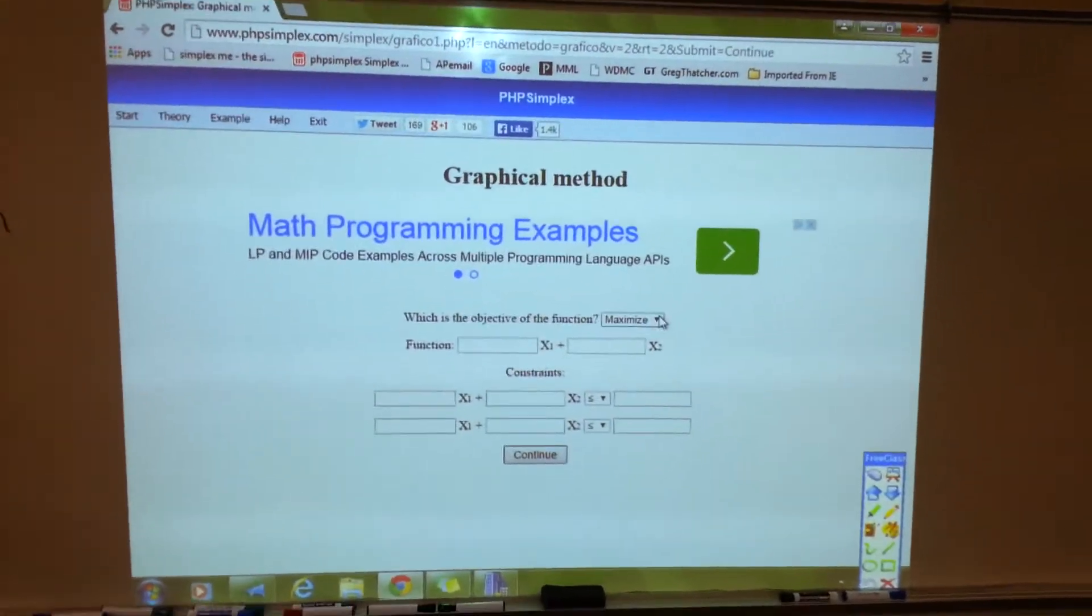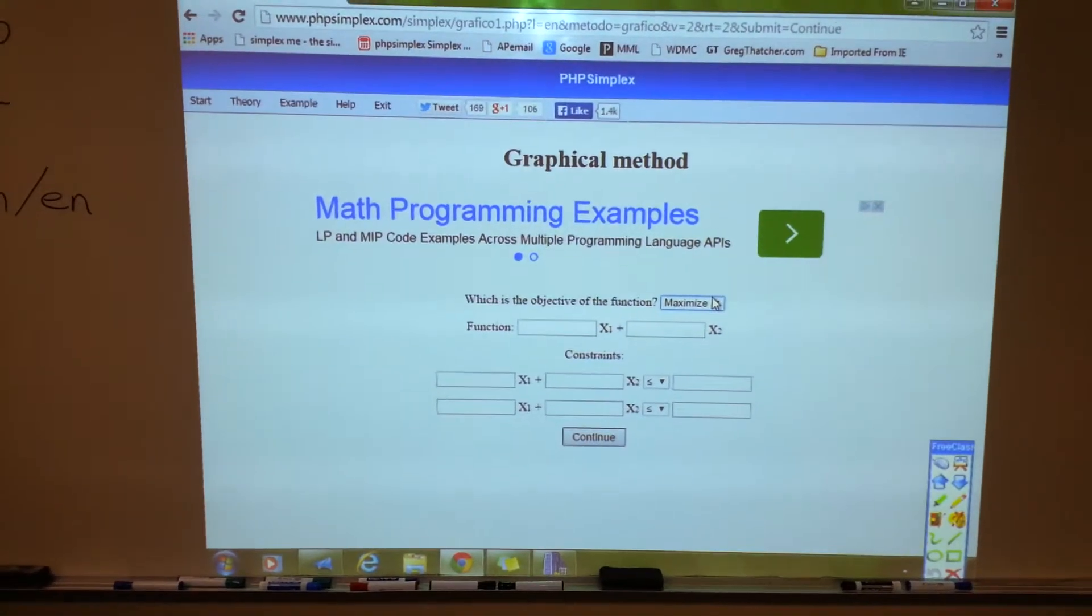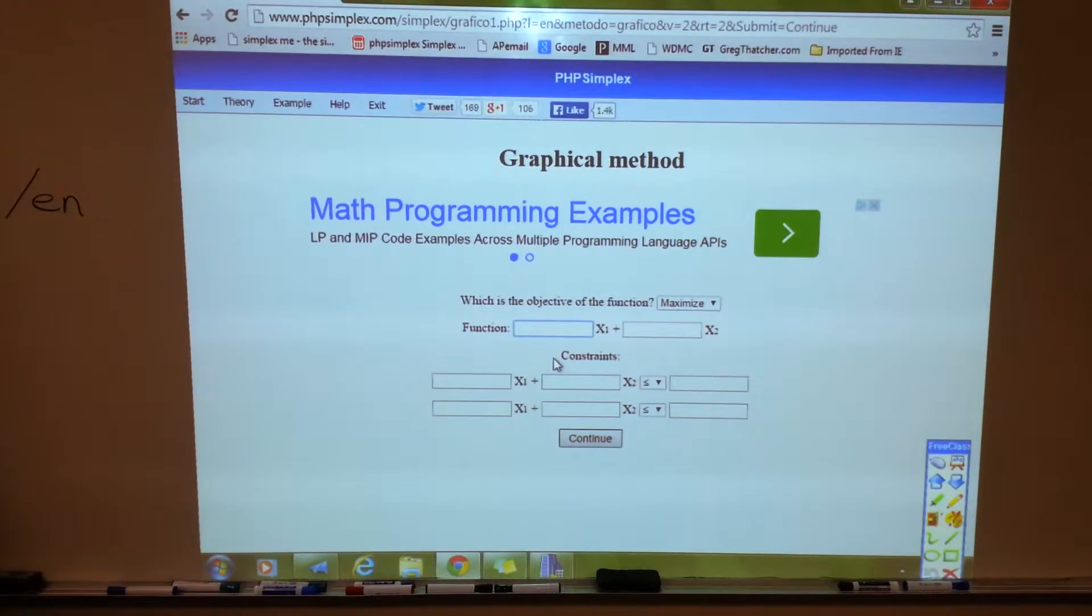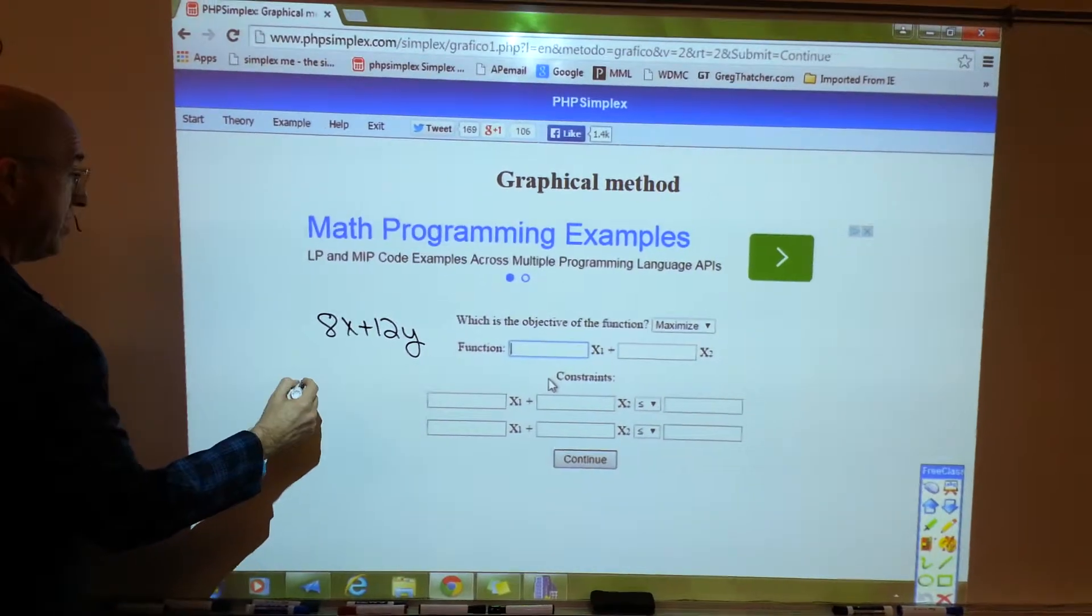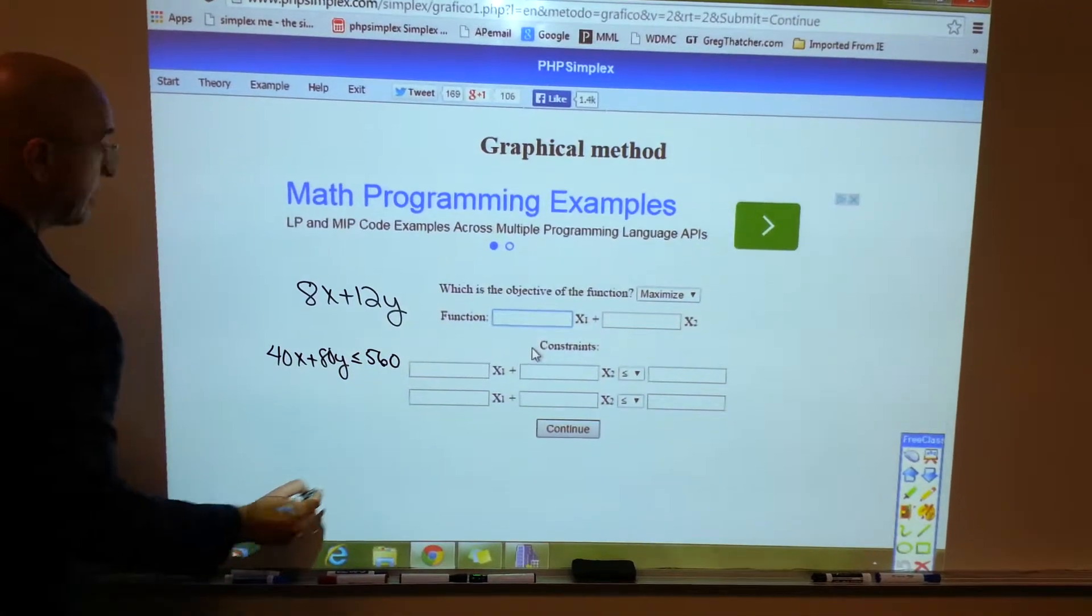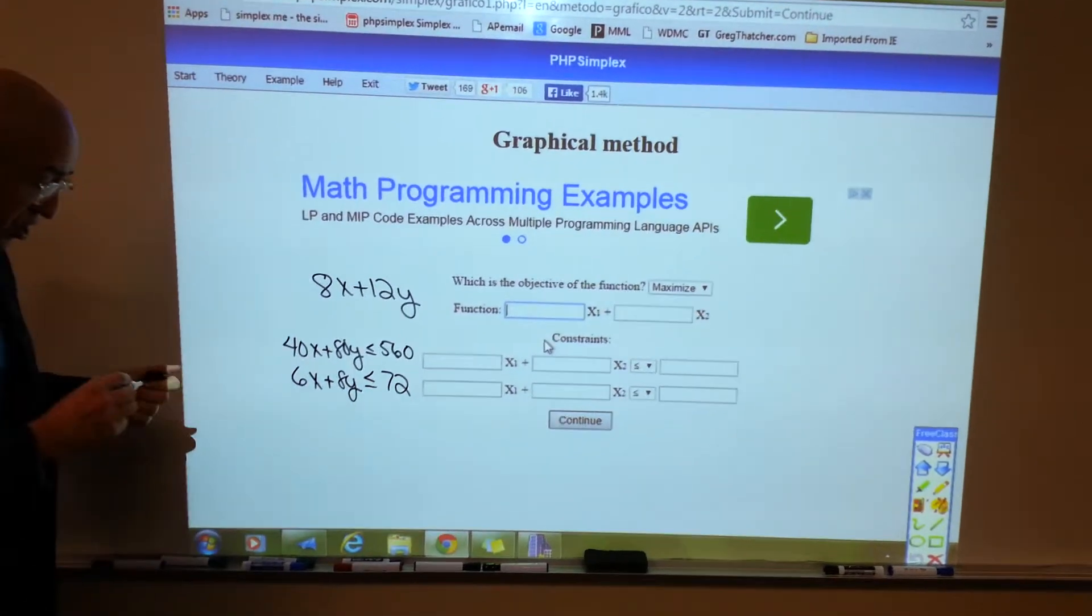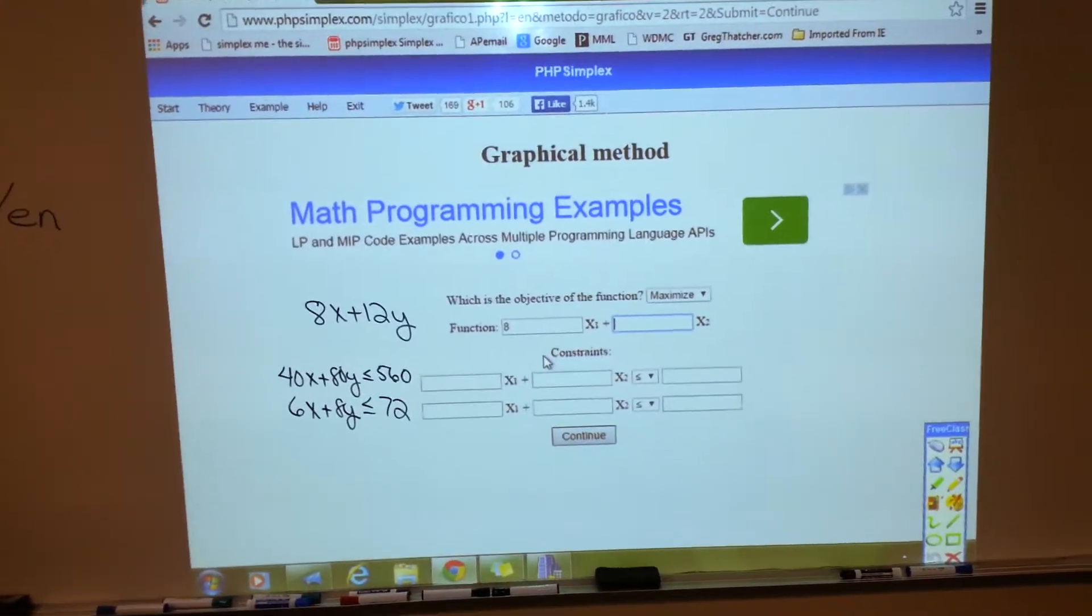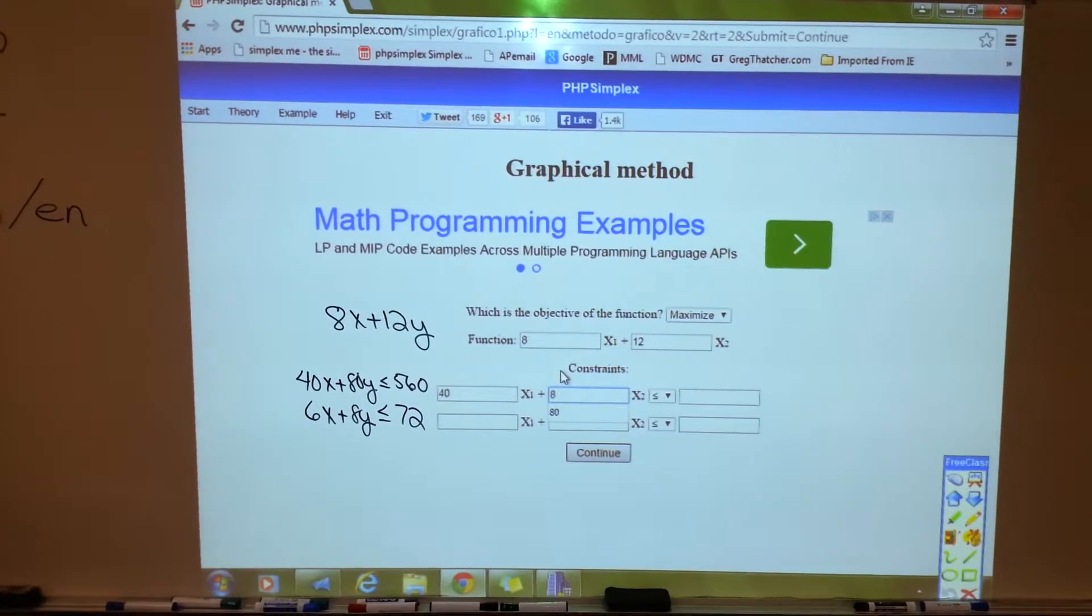This will handle maximize or minimize. You use the pull down bar to choose minimize. We're doing maximize. This one, patching in. First of all, the objective function: 8x plus 12y. And the two constraints. 40x plus 80y is less than or equal to 560.